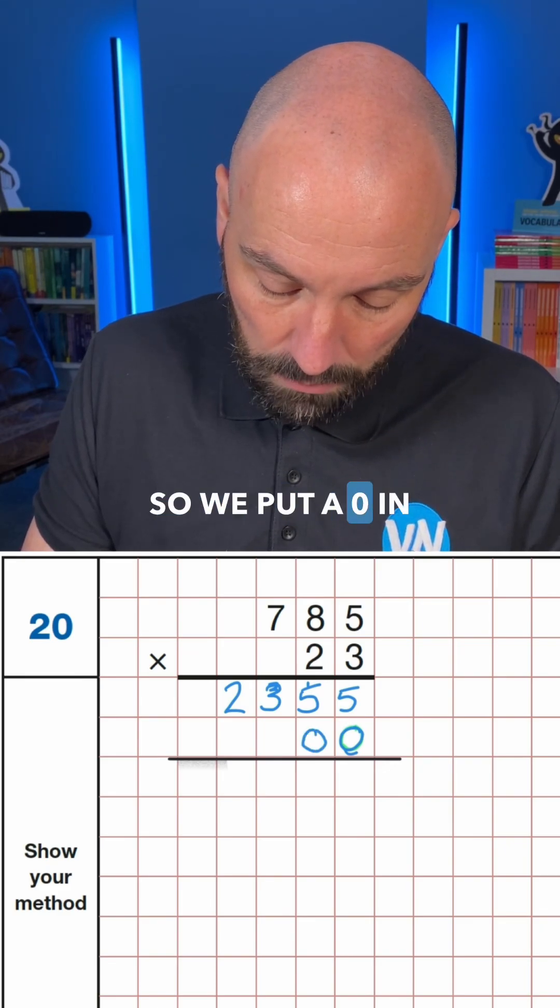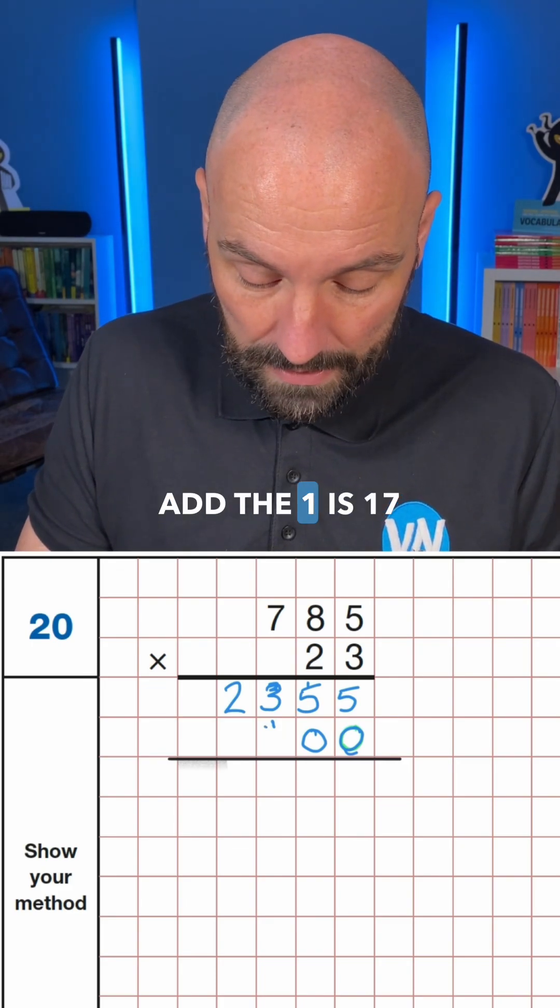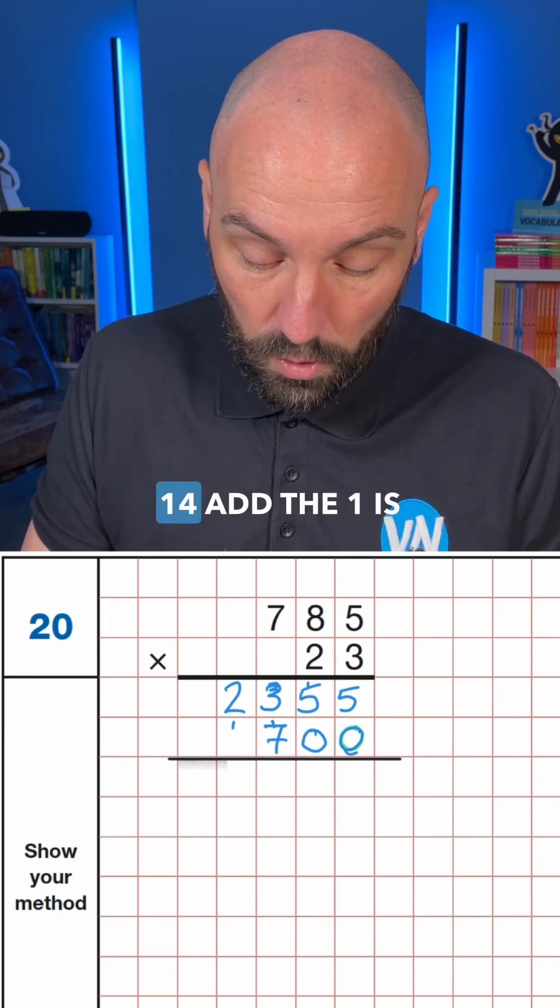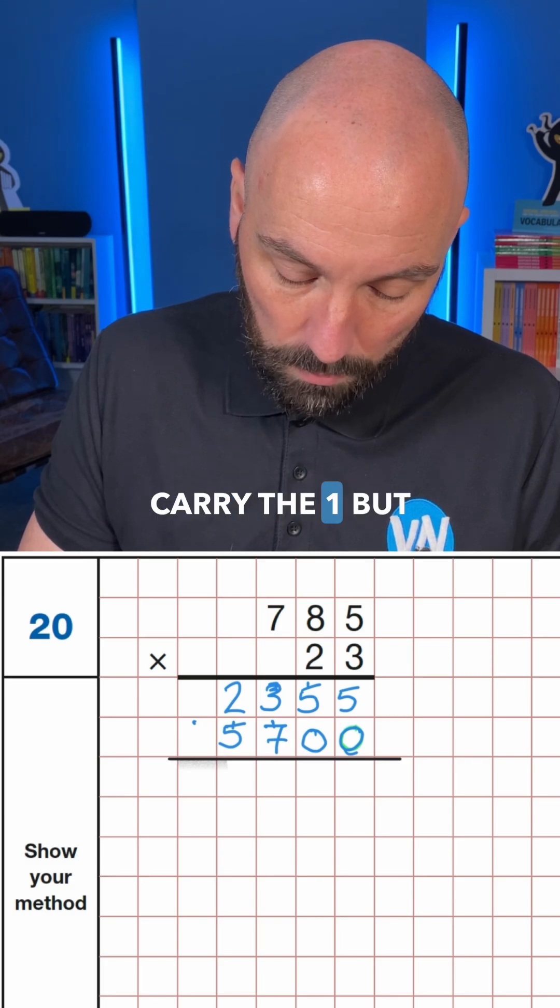2 times 5 is 10, so we'd put a 0 in, carry the 1. 2 times 8 is 16, add the 1, is 17, carry the 1. And then 2 times 7 is 14, add the 1, is 15. Essentially carry the 1, but there's nothing else to do.